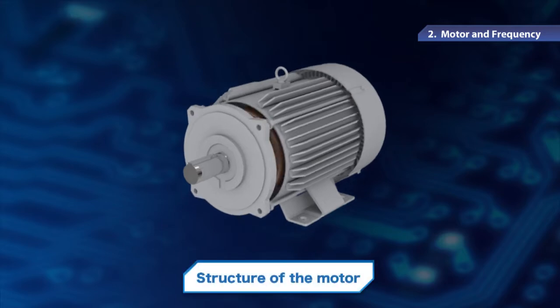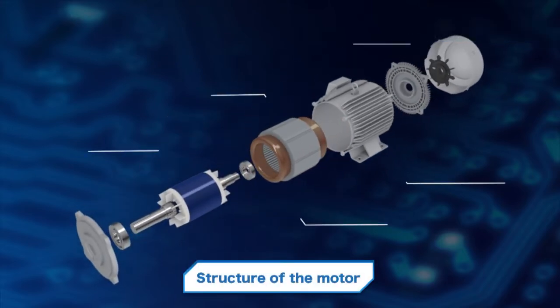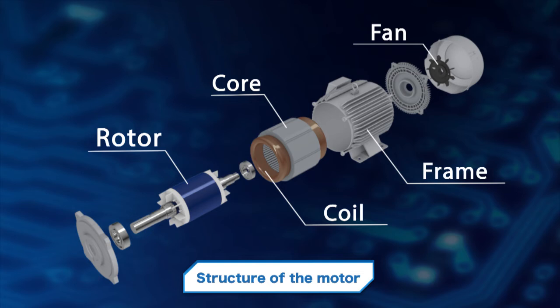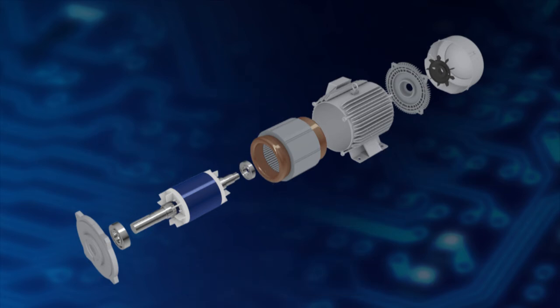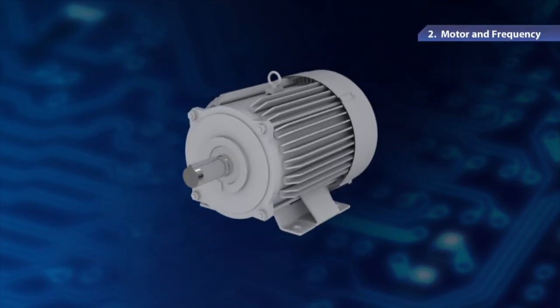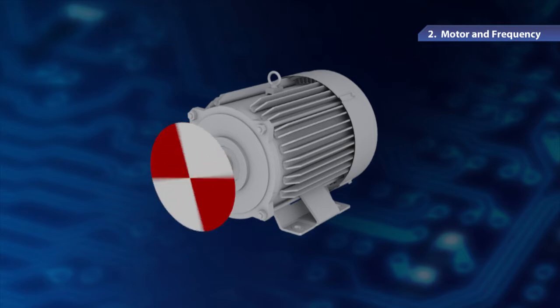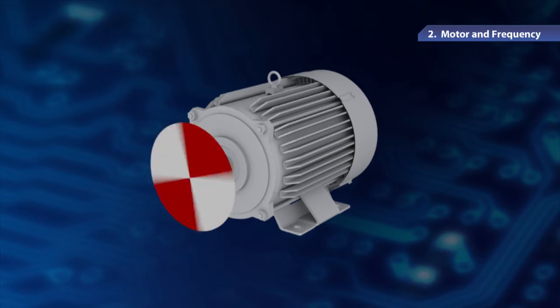Let's see what a motor is like. A motor rotates when a current flows into the motor. Simply put, the motor runs on magnetic force and electricity.